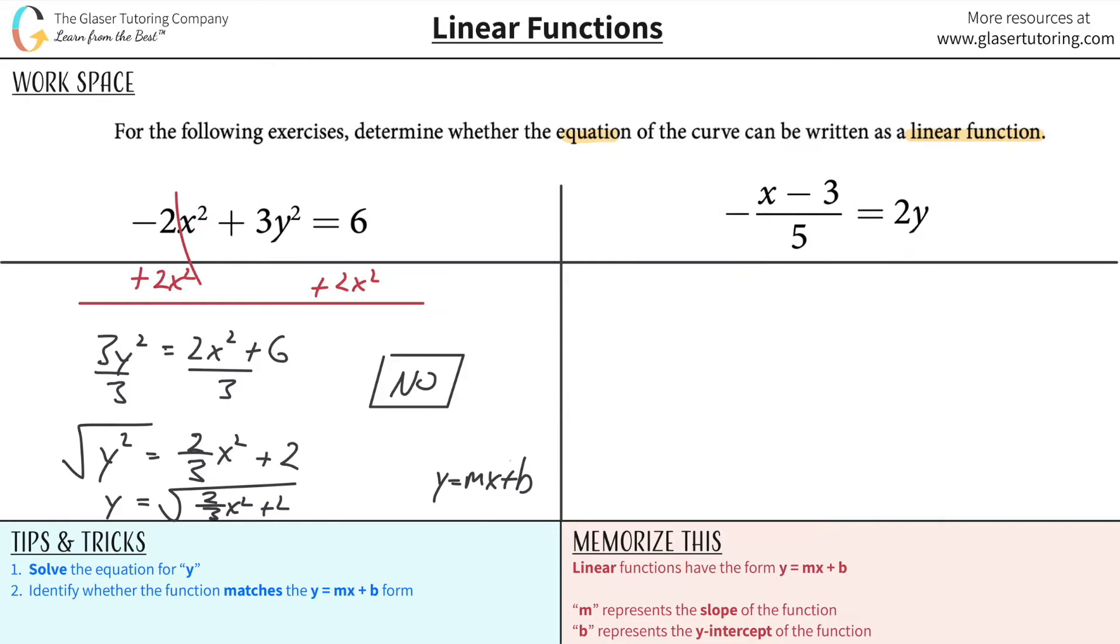So what our job here is, our job is to take this thing and break it down into y equals something. So the first thing is I notice y is basically by itself. Well, first thing, I like to write it on the left. I'm sure a lot of you do too. So I'm going to write 2y is equal to negative x minus 3 over 5.